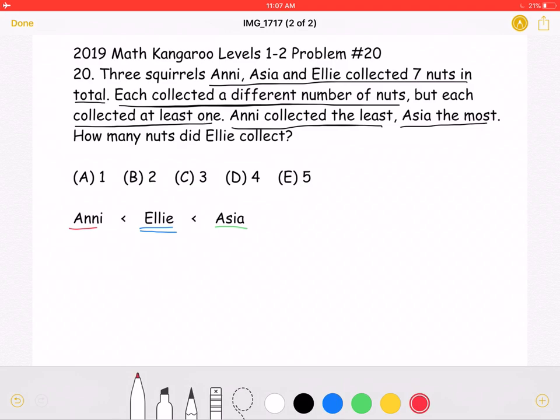So let's try a few numbers to see what we must add together to get seven. Let's start by putting Annie as collecting one, plus Ellie as collecting two, plus Asia collecting three. We would get a total of six, which is not enough, as we want a total of seven.